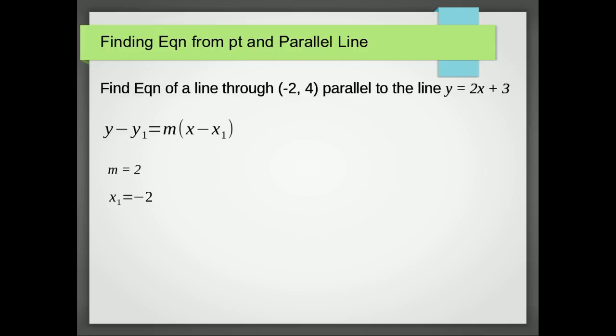We're using our point here, so we've got x1 equals minus 2, y1 equals 4. Substitute the three points back into the equation, and we get y minus 4 equals 2, open bracket, x plus 2.